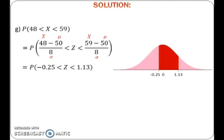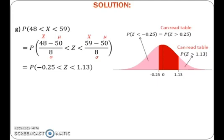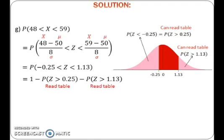To find probability, refer to the standard normal distribution table. Remember that the table gives probability of z greater than a certain positive value. To get probability of z between negative 0.25 and positive 1.13, take 1 minus probability of z greater than 0.25 minus probability of z greater than 1.13. Read probability of z greater than 0.25 and probability of z greater than 1.13 from the table and calculate the probability.